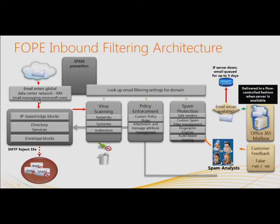With IP-based edge blocks, based on blacklisting and whitelisting, Microsoft updates these lists and drops emails right before they enter the network. If customers after deployment come with reports about which emails were dropped, that's more of a service request to be raised with support. From there, directory services means you have users created in Office 365 and FOPE, and based on the email addresses there, you'll either accept or drop an email — basically only allowing emails for authentic users. That's the directory-based edge blocking.